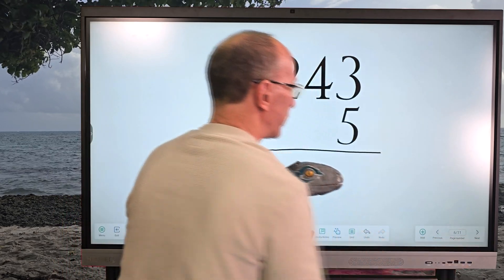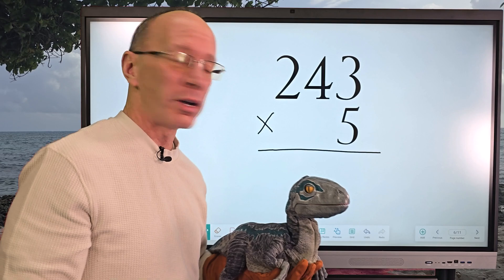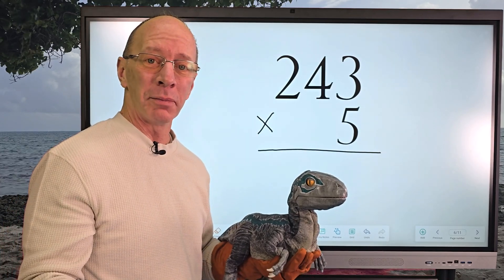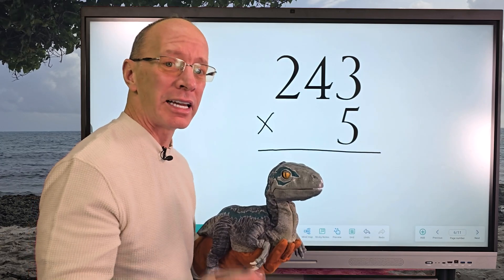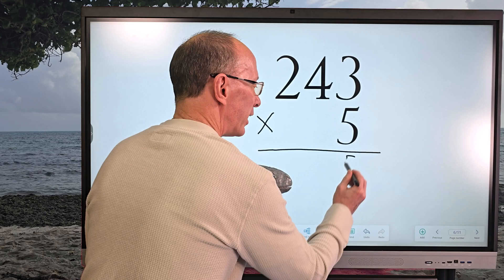So again, I'm going to take five times three, which is fifteen. So I put the five right here, carry the one up here. I'm going to add that one in a little bit—not yet, but in a little bit.